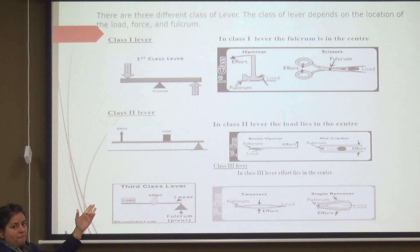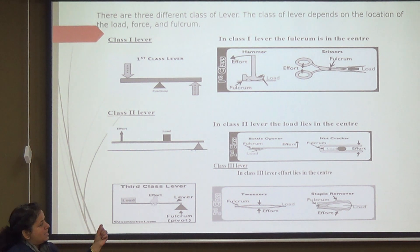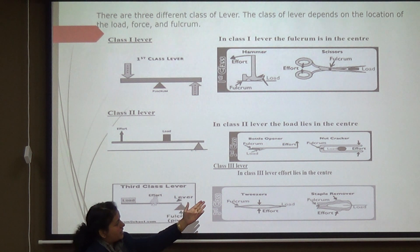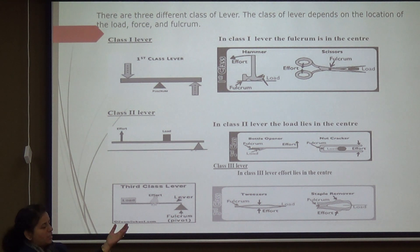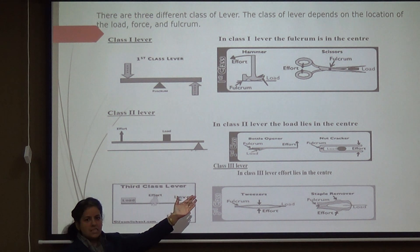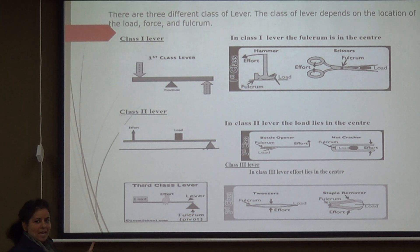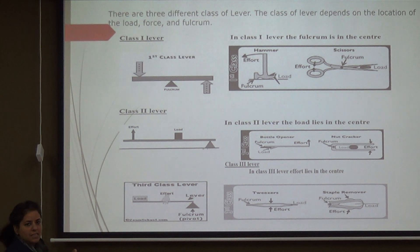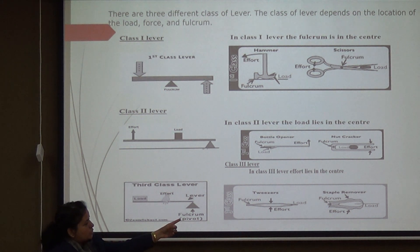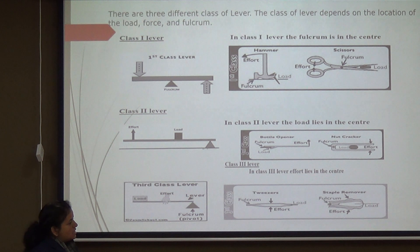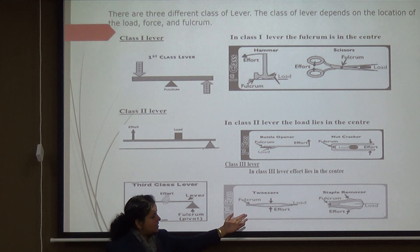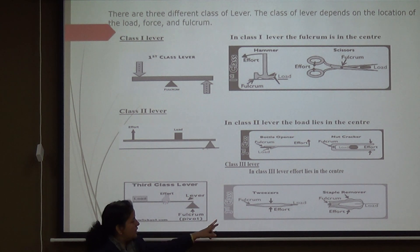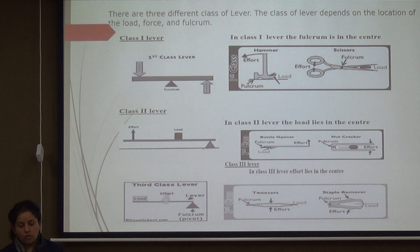In a Class 2 lever, using 'FLE,' the load is in the center. A good example is the nutcracker — you place the nut in the center, apply effort toward one end, and the fulcrum is at the other end. In a Class 3 lever, the effort is in the center. Tweezers are a good example, used at home and in surgeries: you lift the load at one end, apply effort in the center, and the fulcrum is the fixed point at the other end. These are the three classes of levers.